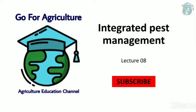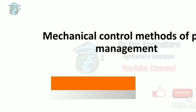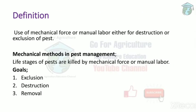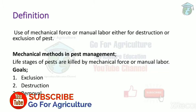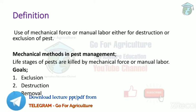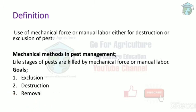Welcome back to our channel Go for Agriculture. In today's lecture we'll see mechanical control methods of pest management. The definition of mechanical control is the use of mechanical force or manual labor either for destruction or exclusion of pests. In mechanical method, life stages of pests — eggs, nymphs, and adults or immature stages — are killed by mechanical force or manual labor.